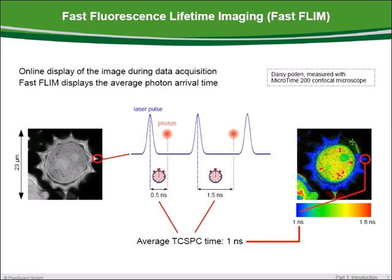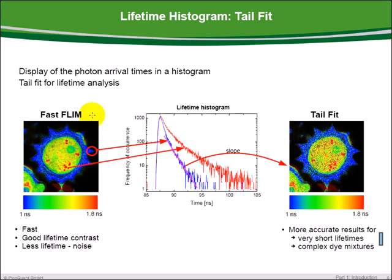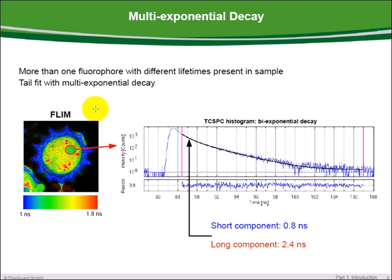We observe in this sample of a daisy pollen that autofluorescence can deliver strong lifetime contrast. Comparing this fast FLIM analysis with a single exponential tail-fitting procedure, we observe that the tail-fit FLIM image exhibits more noise in its lifetime display; however, the obtained lifetimes are comparable. The tail-fit delivers more accurate results for very short lifetimes and complex dye mixtures. Analyzing a certain region of this daisy pollen, we find in the TCSPC histogram a bi-exponential decay exhibiting two lifetimes of 0.8 and 2.4 nanoseconds.